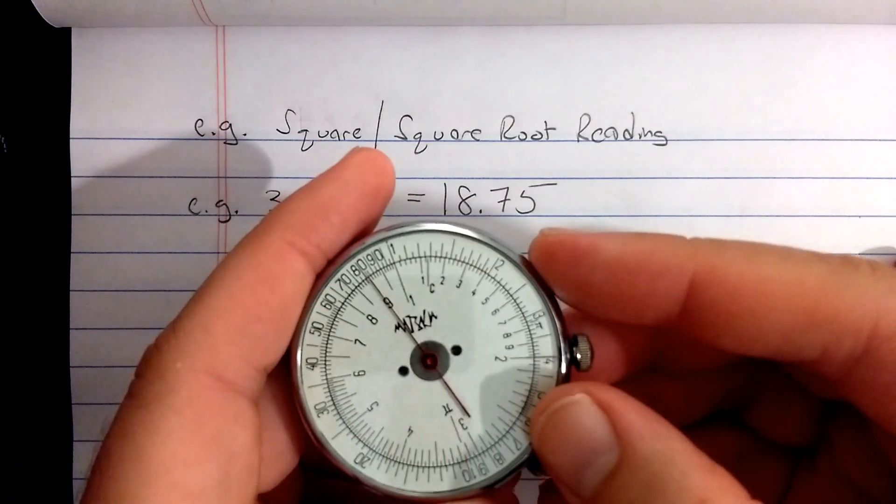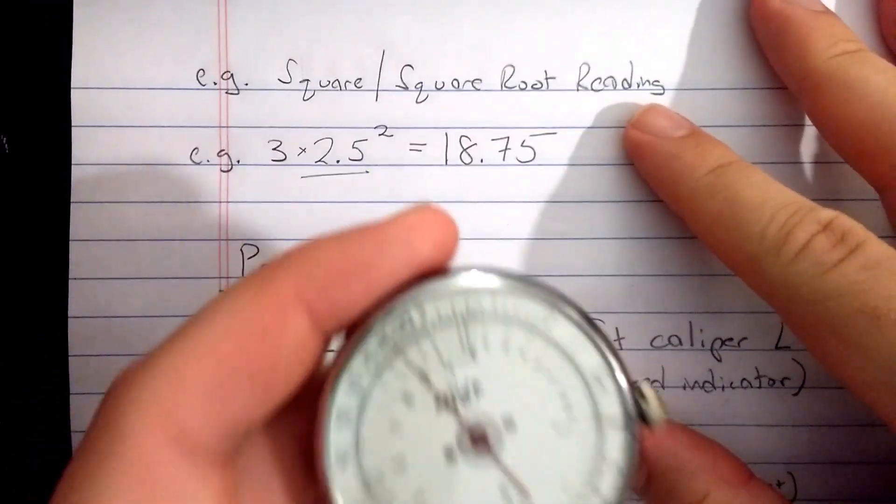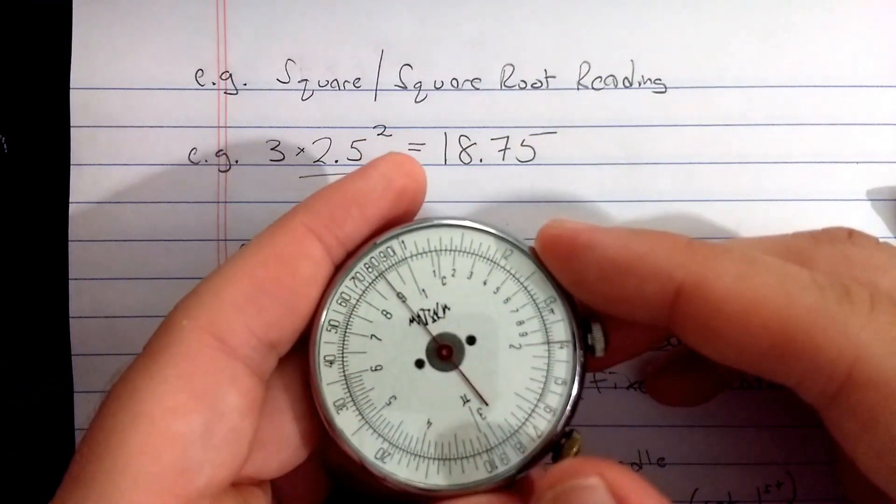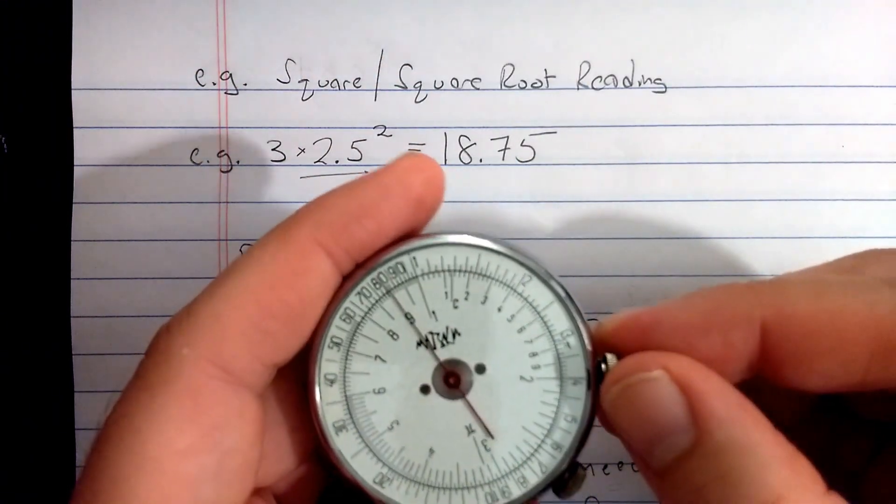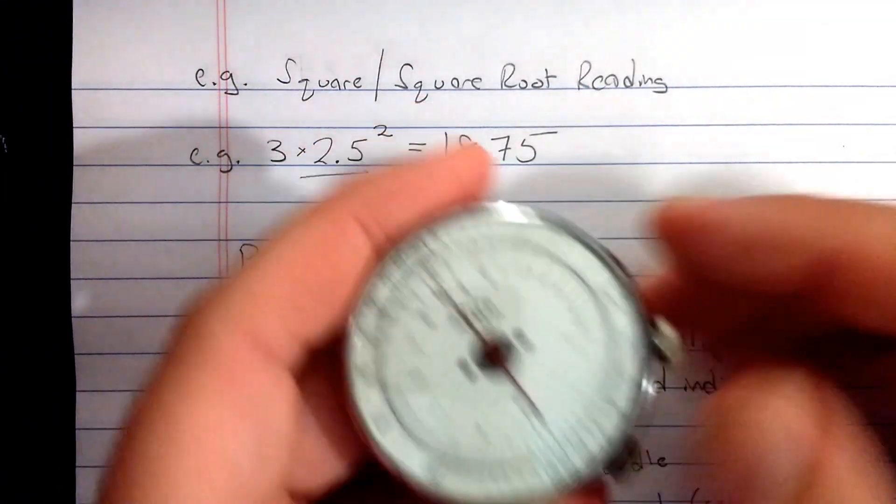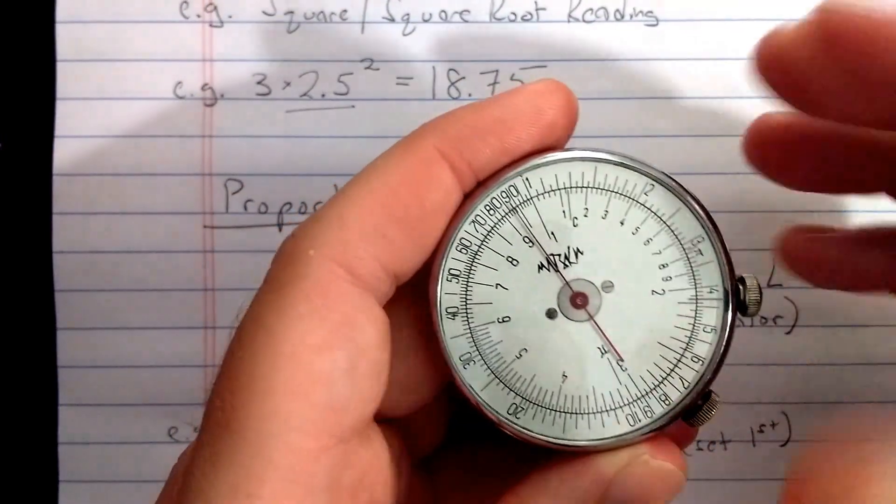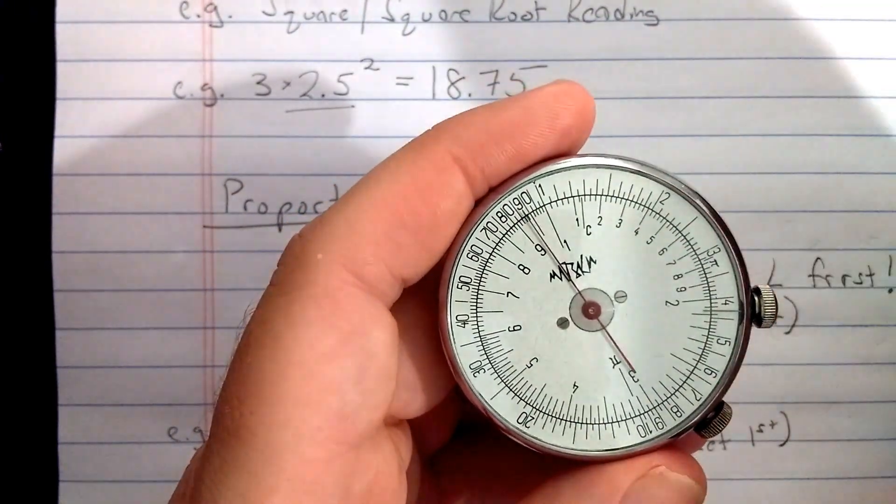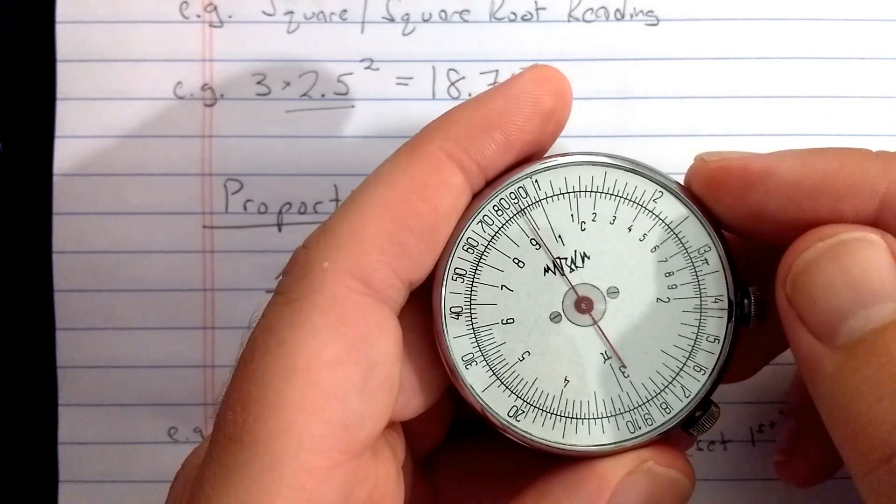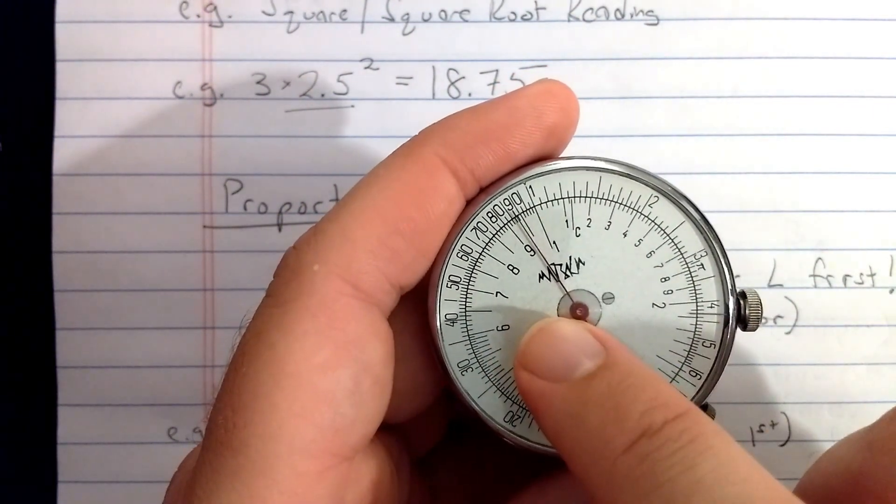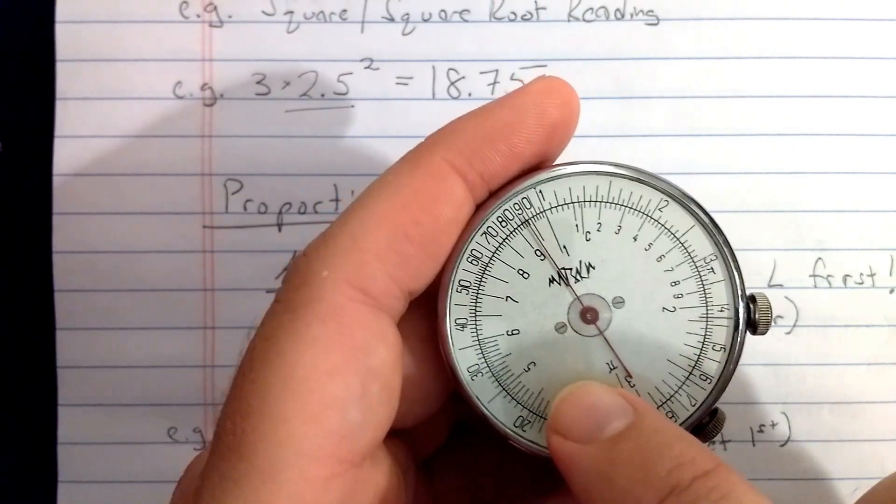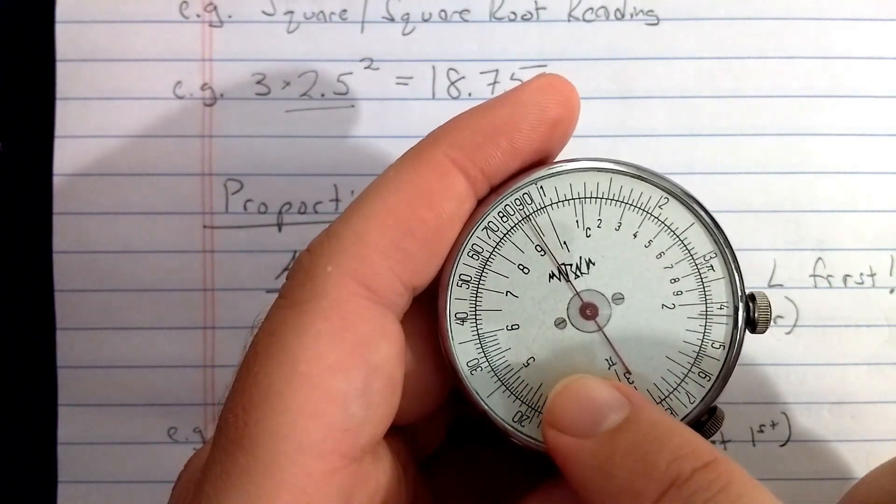So let's say I want to do 3 times 2.5 squared. Well, on a regular slide rule, you could do this using the A, B, and the C, D with respect to each other. And the fact that the C and the D scale are twice as long as the A and B scale and represent the squares.